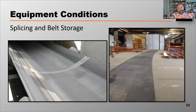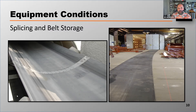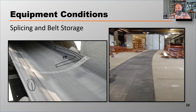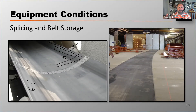One of the most overlooked reasons why a belt mistracks is improper splicing and improper belt storage. A lot of facilities, when they go to cut a belt, will square off the edge using a framing square off the belt edge — but those edges may not be straight. It's not uncommon for the edges of a belt to have a little bit of a wave to them. So if you use the belt edge to get a square cut, you'll end up with what's called a crooked splice.